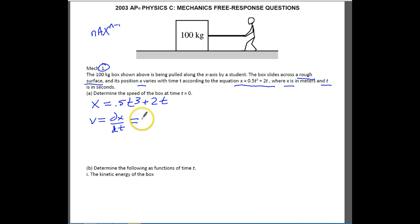So 0.5 times 3 is going to give us 1.5. And then t to the 3 minus 1 is going to give us 2. Plus, and then this is t to the 1. So 1 times 2 is 2. And 1 minus 1 is 0. And t to the 0 would just be 1. So that is the equation so far. But they want to know what is the velocity or the speed at t equals 0. So v equals 1.5 times 0 squared plus 2. So this is 0. And we get v equals 2 meters per second.